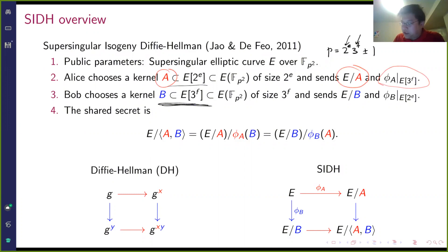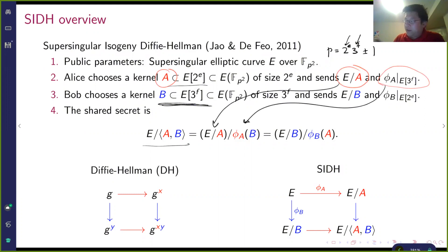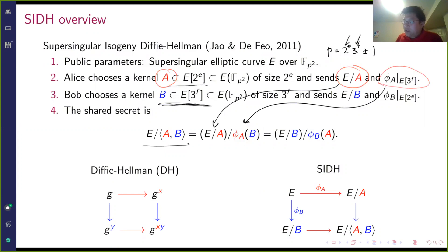You need to do this because in order to do key exchange you need a shared secret, which is the original elliptic curve modulo both kernels. You calculate this by taking one codomain and applying the other person's isogeny evaluated on your kernel. But you're not transmitting A or B directly — you transmit the restricted image of your isogeny. This gives you a key exchange that, if you squint, looks roughly like Diffie-Hellman — hence Supersingular Isogeny Diffie-Hellman.